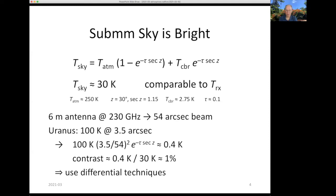Whenever we observe in submillimeter astronomy, we're using differential techniques to subtract the brightness of the sky — the sky alone in one case and the sky plus our target in another. That either means beam switching back and forth between two nearby patches on the sky, or some other technique such as interferometry, which is implicitly a differential technique.